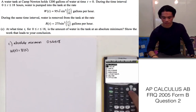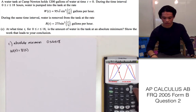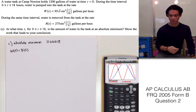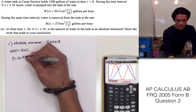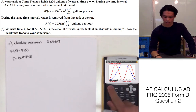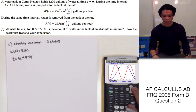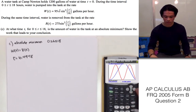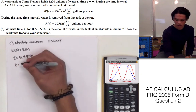Let's go ahead and find what those values of t are. We do second trace intersect, first curve, guess. The value of t at the first intersection is 6.4948. We can see we have another intersection, so second trace again to find that value — second curve and guess — and the value of t is 12.9748.